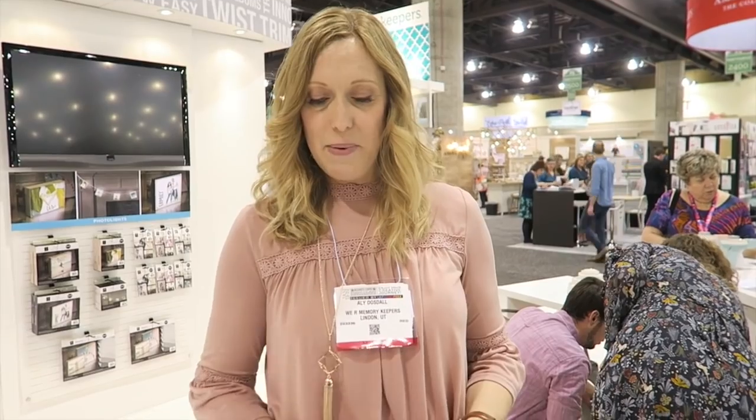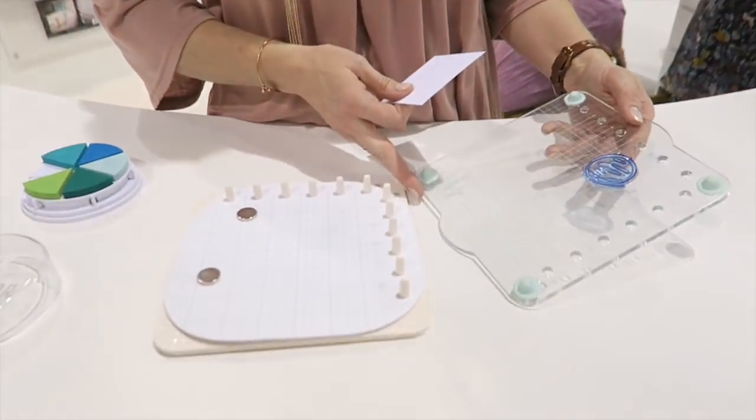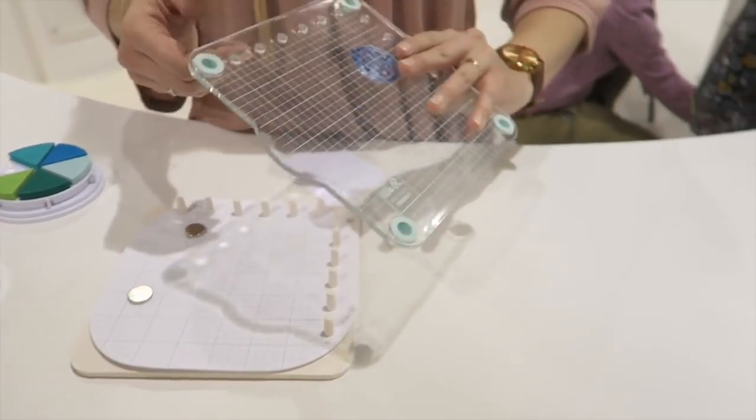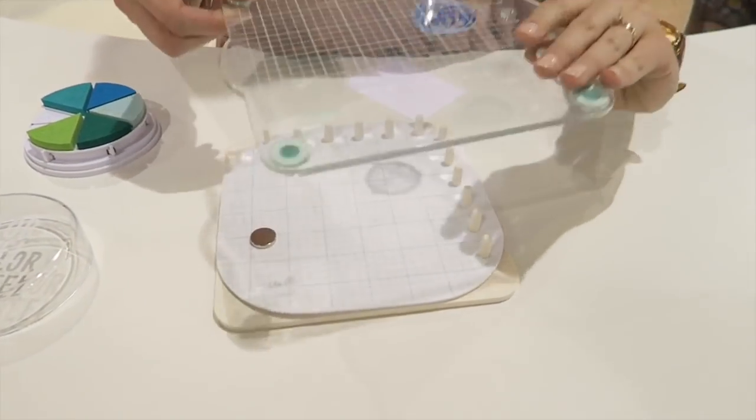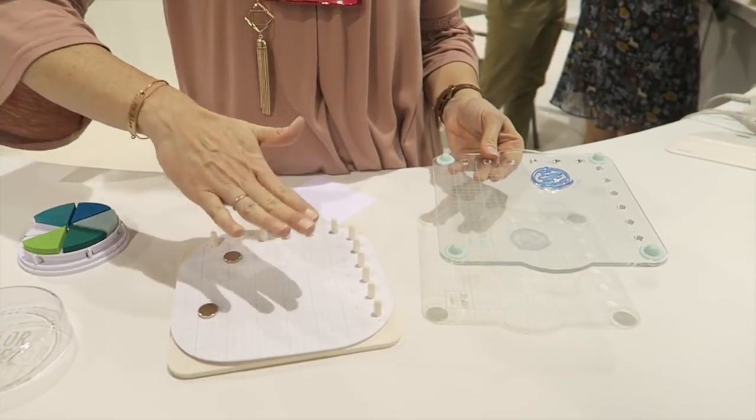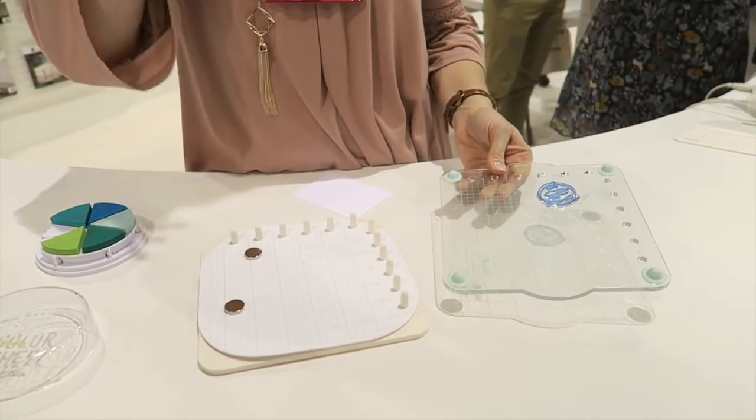So I'm going to show you the new Precision Press Advance. This is shipping in May and it's a wonderful tool for stampers. So this time we got rid of all the hinges so you just are stamping flat down and that way your stamp isn't getting more pressure on one edge or the other as you're coming down with the hinge.